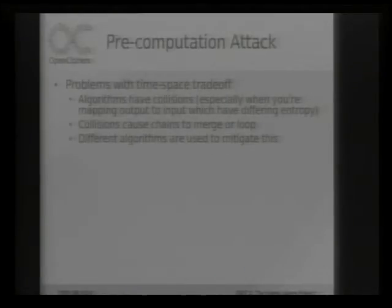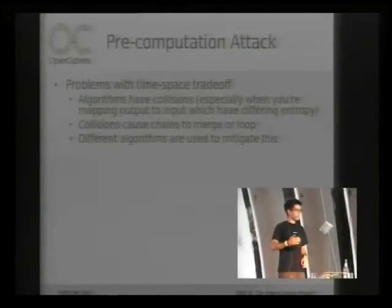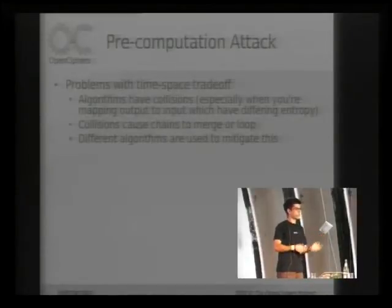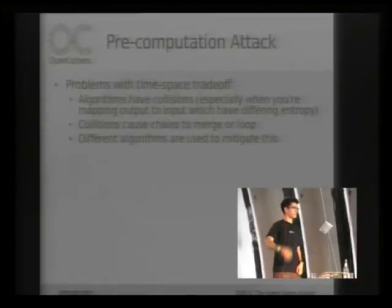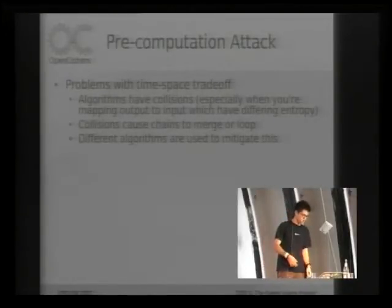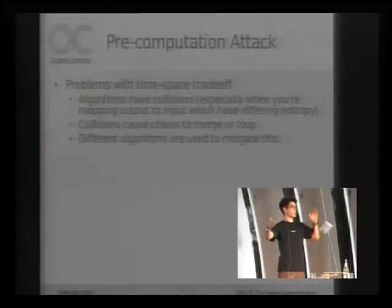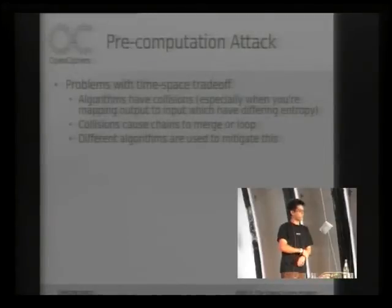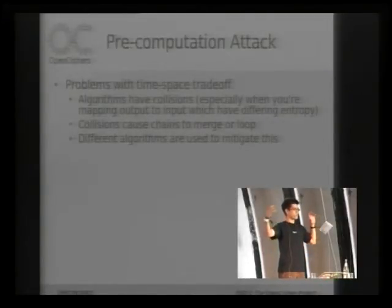The main problem with time-space trade-offs is collisions. For example, with LM, you have a password which realistically has only about 2 to the 37 bits of entropy, and that's being mapped up to 2 to the 56, so you end up with tons of collisions, especially when you're mapping from 2 to the 56 back down to 2 to the 37. A lot of people have worked on ways to reduce these collisions, because whenever you have collisions, you end up with huge overlapping chains inside your tables, and there are also possibilities of loops.